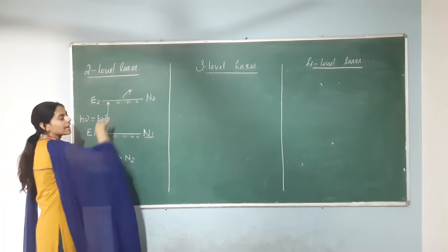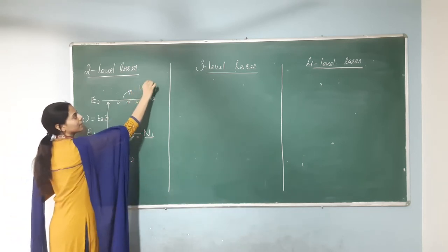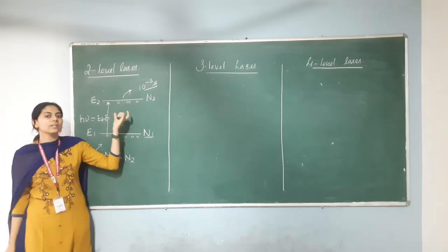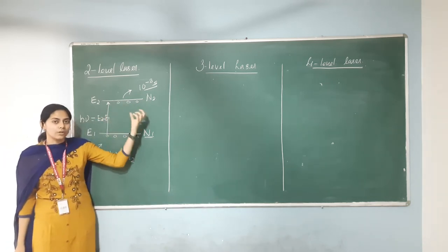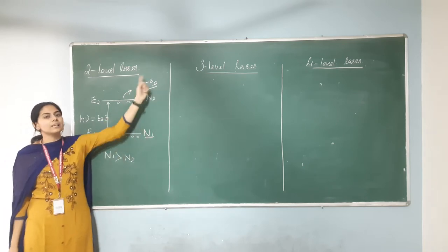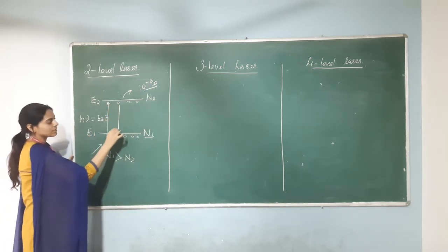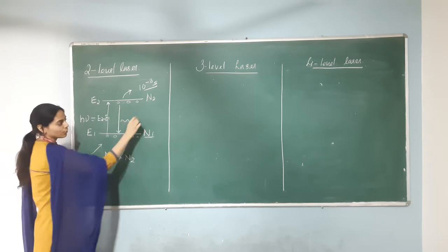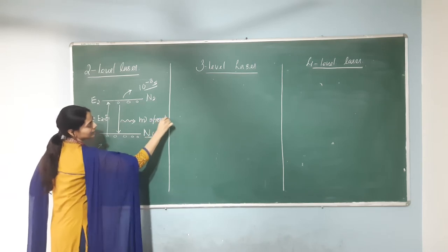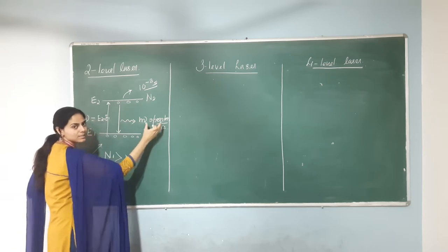Since the lifetime of an atom on the excited state is only 10^-8 seconds — a very rapid time — they are not going to stay on the excited state for long. They will immediately come back to their ground state after living their lifetime, and when they come back down, they will emit a photon of H_nu through spontaneous emission.